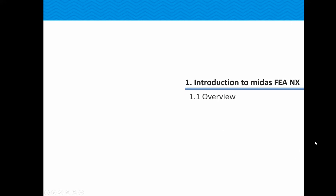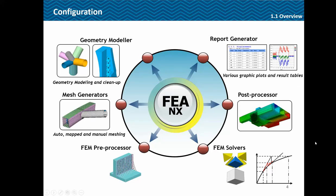So first of all the overview. MyDAS FEA Annex comprises of a geometry modeler to model any kind of complex geometry, the mesh generators, the FEM pre-processors for loading boundary conditions and so on, the FEM solvers, then the post-processor to view the results, and finally the report generator. These are the basic parts of any FEA software.